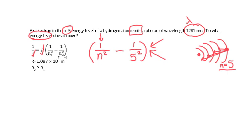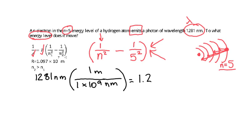So we are ready to solve this equation. First thing we're going to do, though, is convert our 1281 nanometers into meters. So 1281 nanometers, for every 1 times 10 to the 9th nanometers, there's 1 meter. So that gives us 1.281 times 10 to the minus 6th meters.